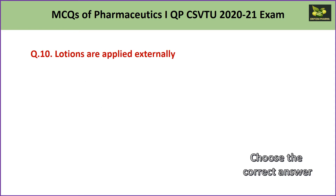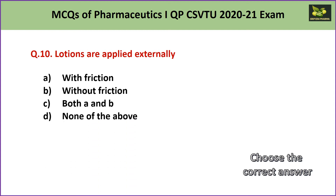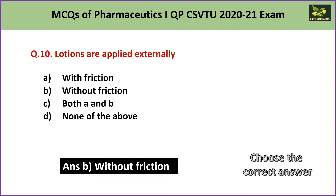Question number 10: Lotions are applied externally A. with friction, B. without friction, C. both A and B, or D. none of the above. As studied in the definition of lotion, lotions are liquid preparations meant for external application without friction. Liniments, by contrast, are liquid or semi-solid preparations applied with friction. Hence the answer is B — without friction.